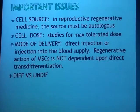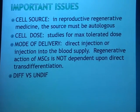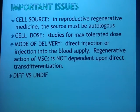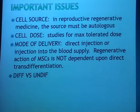Moving to the translational research phase: before translating this work into human research, several questions must be answered. First, cell source — in reproductive regenerative medicine, the only approved source will likely be autologous. Cell dose needs further studies for evaluation of maximum tolerated dose and therapeutic dose. The mode of delivery is controversial, because direct injection into the testis or blood supply is not likely to implant cells inside the seminiferous tubules. However, regenerative action of mesenchymal stem cells is not dependent only upon direct trans-differentiation, so it may improve the testicular microenvironment, inducing endogenous stem cells to act. Differentiated versus undifferentiated stem cell injection needs comparative studies.